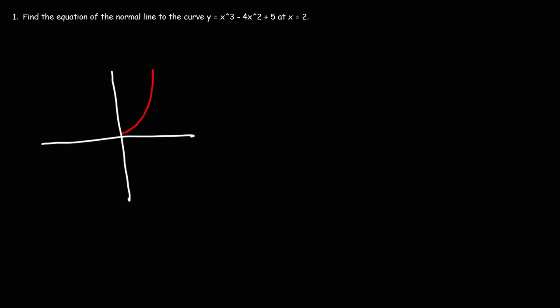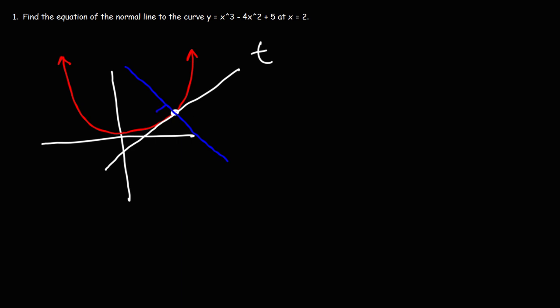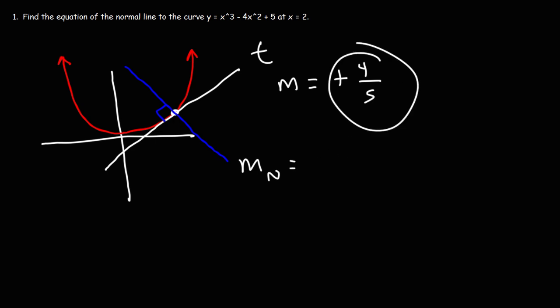Let's say we have the curve y equals x squared and we want to find the normal line at some point. The tangent line is the line that intersects this curve at one point. The normal line, which I'm going to draw in blue, is the line that is perpendicular to the tangent line. So if the slope of the tangent line is positive 4 over 5, the slope of the normal line is going to be the negative reciprocal of that value: negative 5 over 4. But the point of intersection is the same.